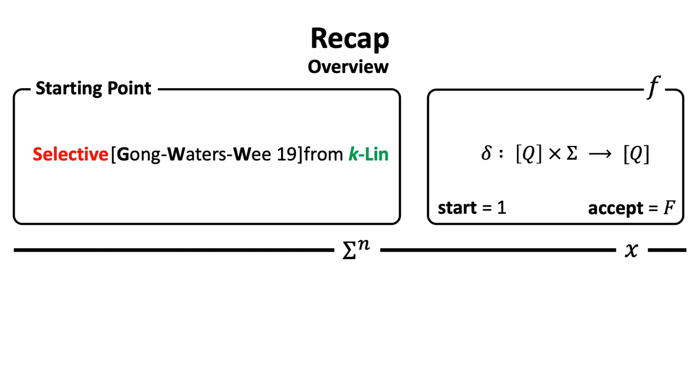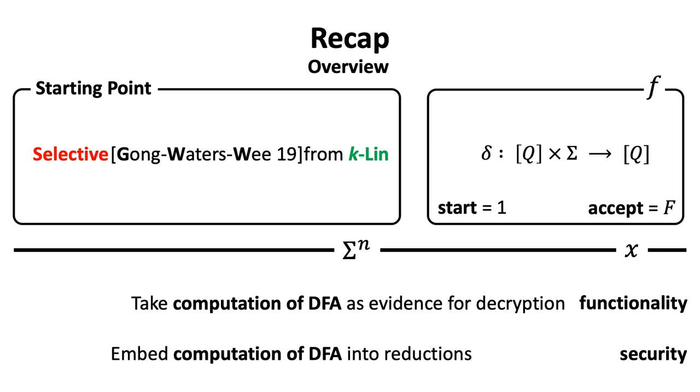Let me give a review of their strategy and technique, with a key associated with F and a ciphertext associated with X. Both functionality and security rely on information of computation of DFA, that is the state we reach while computing F. For the functionality, they take computation of DFA as evidence for decryption. This is also the paradigm inherited from the first ABE for DFA by Waters.